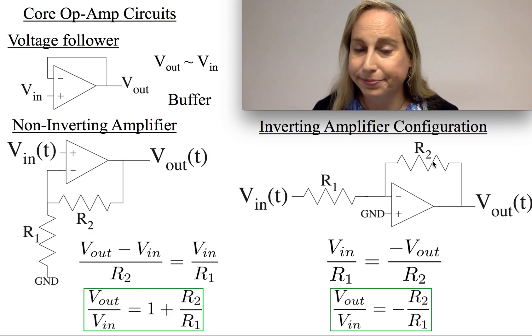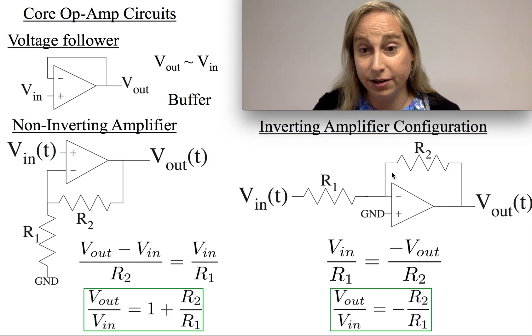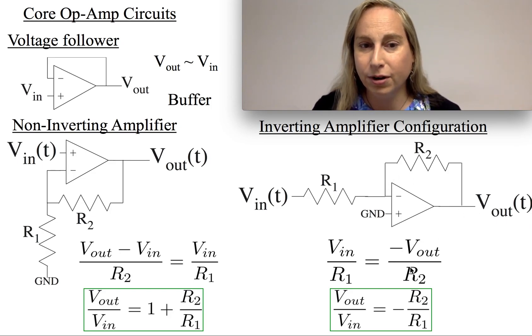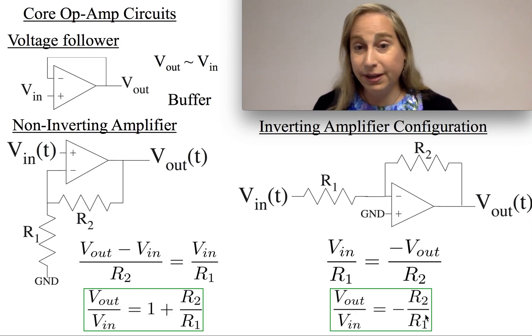If you think about that, I can basically write KCL of this node: Vin over R1 equals minus Vout, because it's ground minus Vout over R2. Rearranging it gives me Vout over Vin is equal to negative R2 over R1.